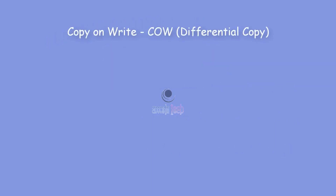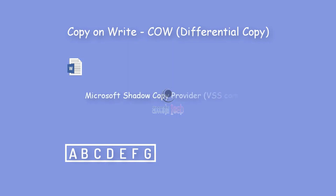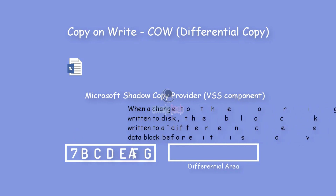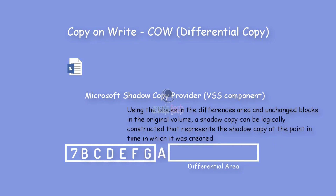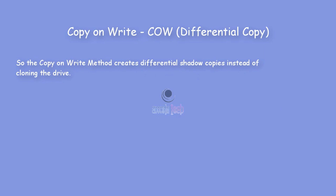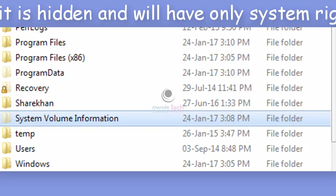The second type of shadow copy is Copy-on-Write (CoW), also known as a differential copy. In this example, I have a Word document and I'm about to write data — say A, B, C, D — on the source volume, then I enable shadow copy on this volume. When I overwrite the letter A with the number 7, before that change is written to disk, the block about to be modified is written to the differential area, preserving the original data. Using the block in the differential area and unchanged blocks in the original volume, a shadow copy can be logically constructed at that point in time. CoW creates differential shadow copies instead of cloning the drive, and these shadow copies are stored in a folder named System Volume Information at the root of the drive, with very limited permissions.